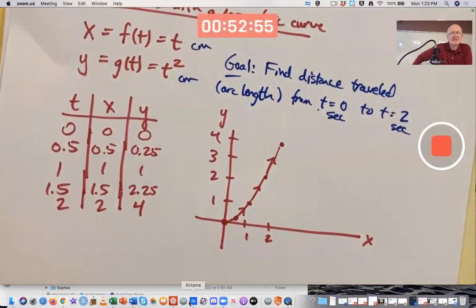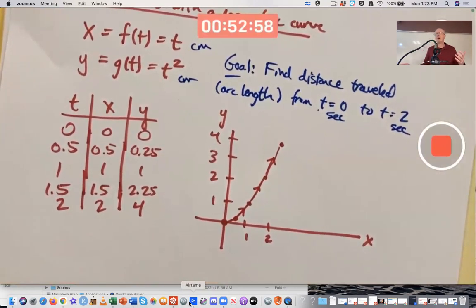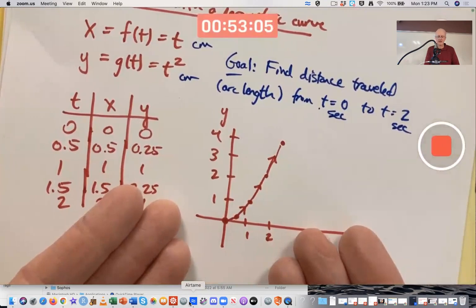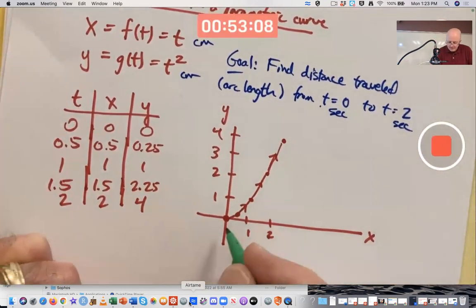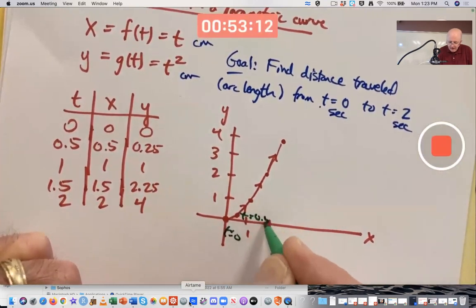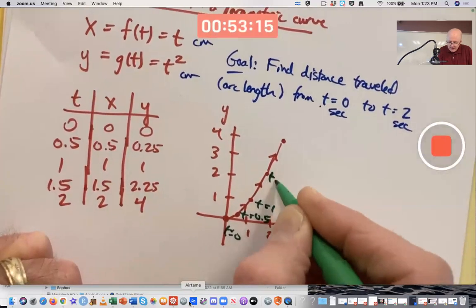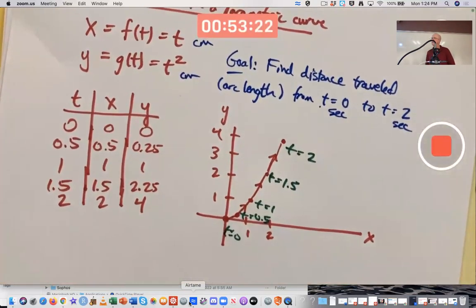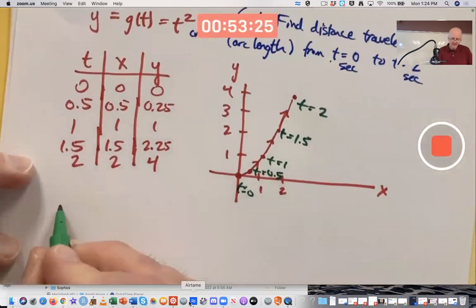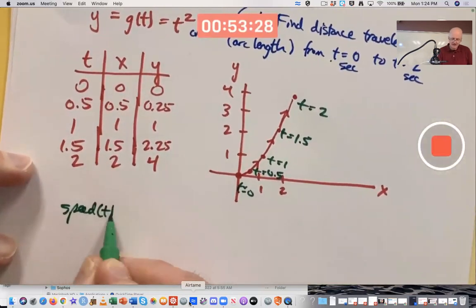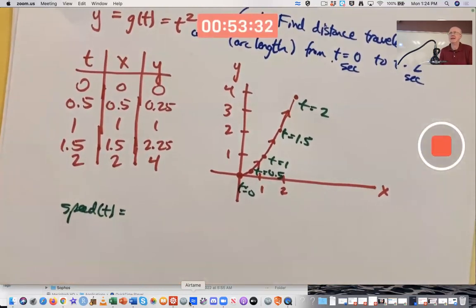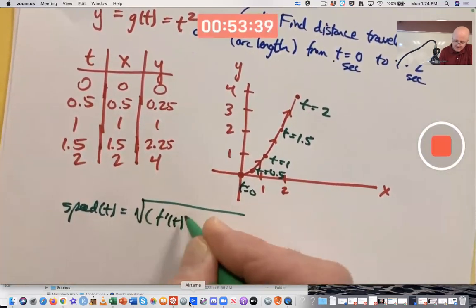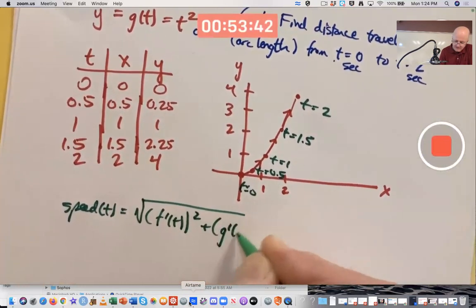But that means we need to figure out what the speed is. Speed is the derivative of the distance traveled. It's not so easy because that's a curve. It is speeding up, by the way. For each half second of time, you travel further and further. So the bug is walking faster and faster. There's a speed function of t. And here's its formula: it's the square root of f prime of t squared plus g prime of t squared.